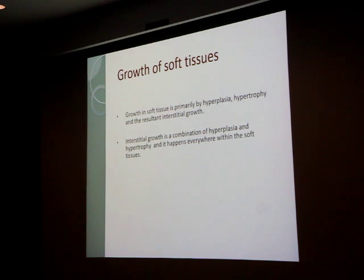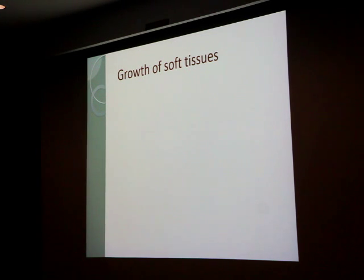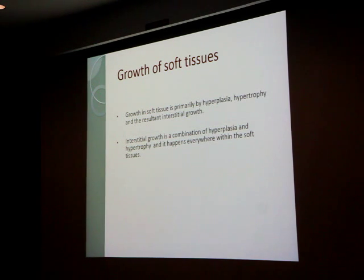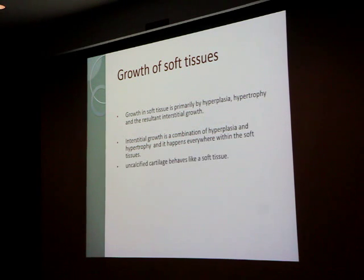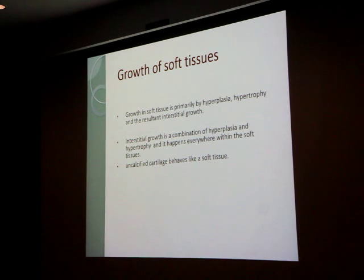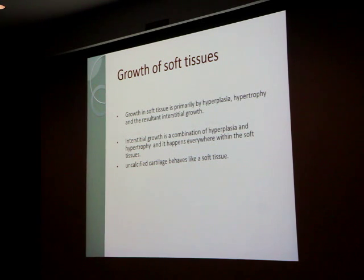Regarding extracellular matrix secretion — from the term itself, it's outside the cell. This material builds upon itself to expand in size. For soft tissue, this is not the primary growth mechanism — it's basically interstitial growth. When you talk about cartilage, it can be soft tissue and hard tissue. If it's interstitial, we treat cartilage as soft tissue; once calcification starts, cartilage would be hard tissue. This is the only tissue in the body that would be like soft tissue and then hard tissue.